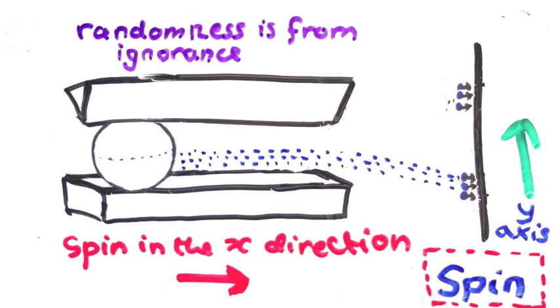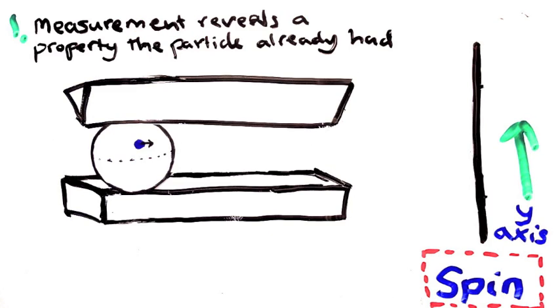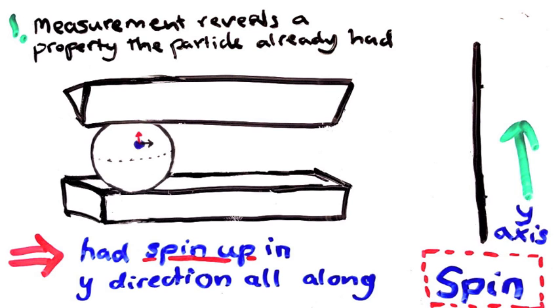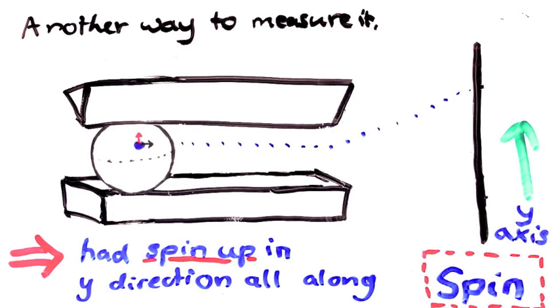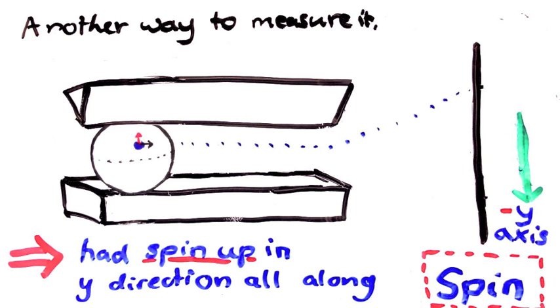Now let's look at sensibility condition number 1 again. We measure that this particle starts here and has spin up in the y-direction, so our condition tells us that it must have had spin up in that direction all along. Again, this seems fairly innocuous. The problem is that there's another way to measure the spin of that particular particle.